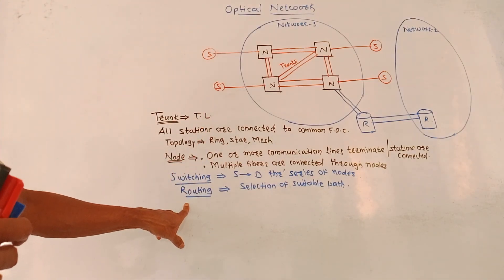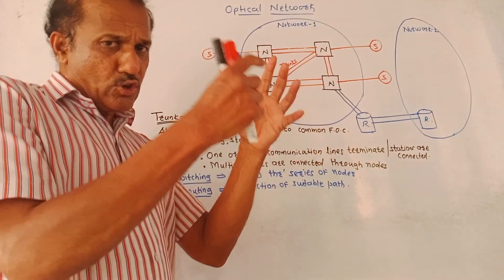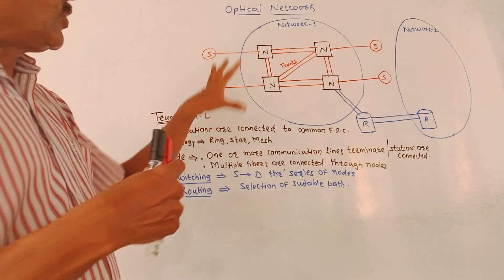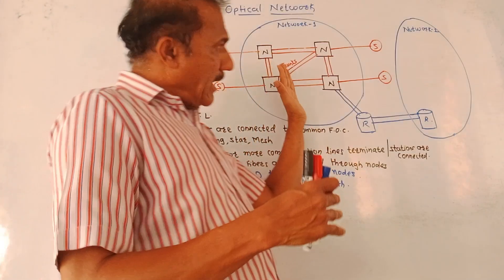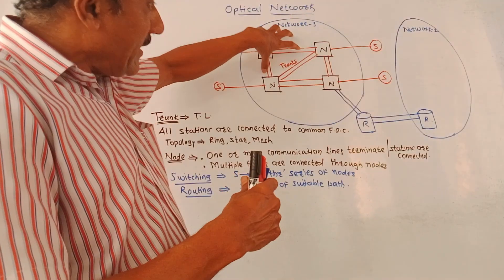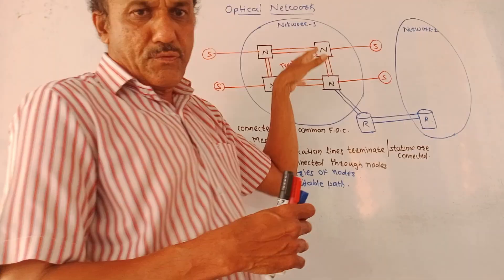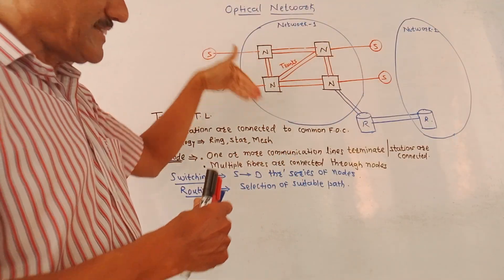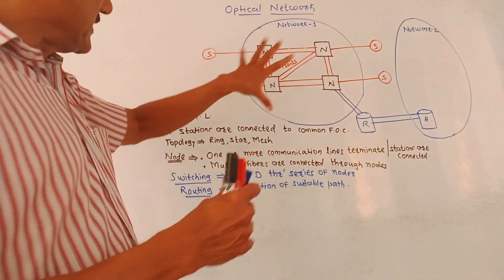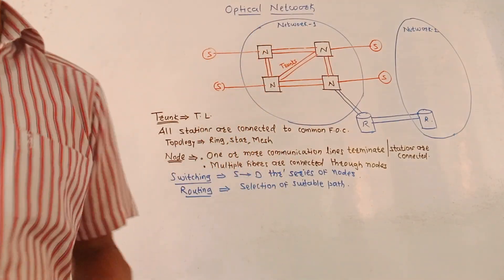The next terminology is routing — the selection of a suitable light path and selection of a particular wavelength is called routing of a signal through the network. The diagram shows two hypothetical networks. Network 2 also contains similar devices like nodes, trunks, and stations. This is the generalized structure showing the elements of an optical network.